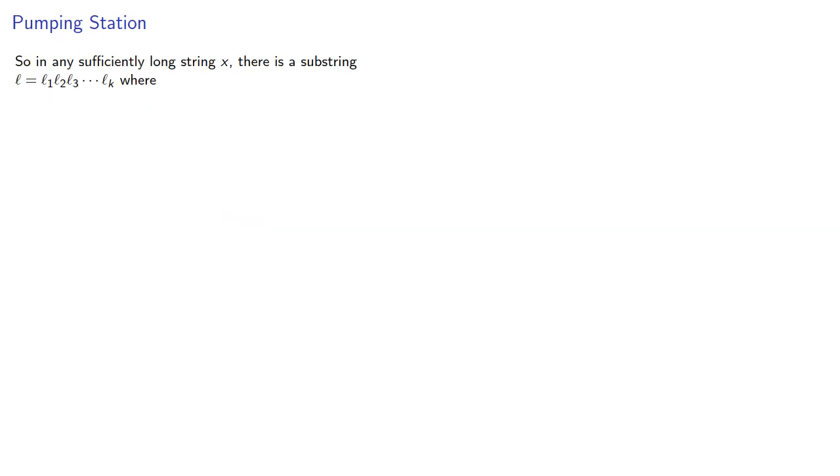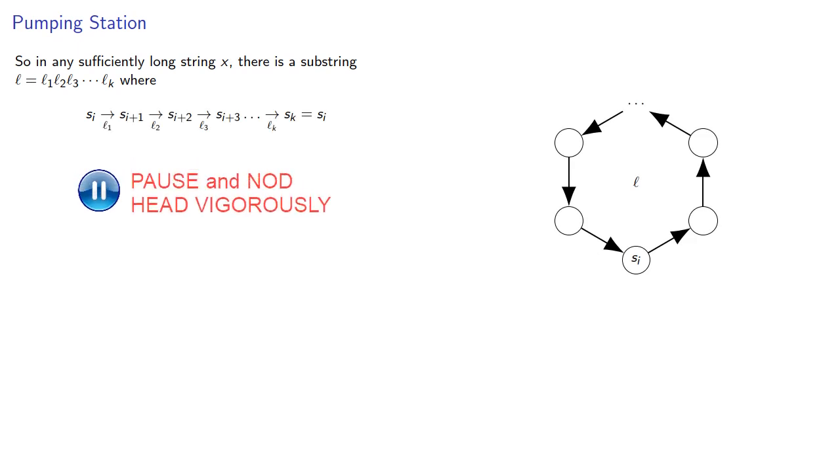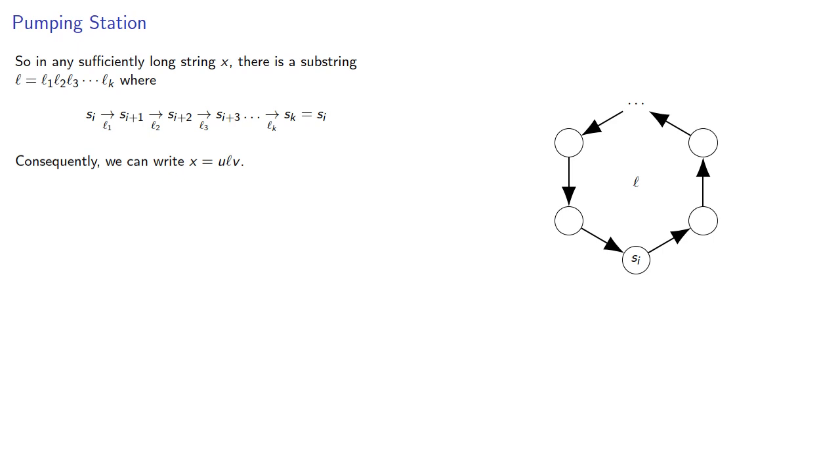So in any sufficiently long string x, there's a substring we'll call l, where in the processing of l we go from a state back to the original state. Consequently, we can write our string x as the initial part u, the loop l, and the final part v. And since the loop must occur on or before the n state, that first portion ul must have a length less than n.